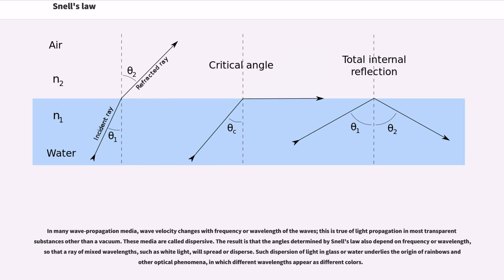In many wave propagation media, wave velocity changes with frequency or wavelength of the waves. This is true of light propagation in most transparent substances other than a vacuum. These media are called dispersive. The result is that the angles determined by Snell's law also depend on frequency or wavelength, so that a ray of mixed wavelengths, such as white light, will spread or disperse. Such dispersion of light in glass or water underlies the origin of rainbows and other optical phenomena, in which different wavelengths appear as different colors.